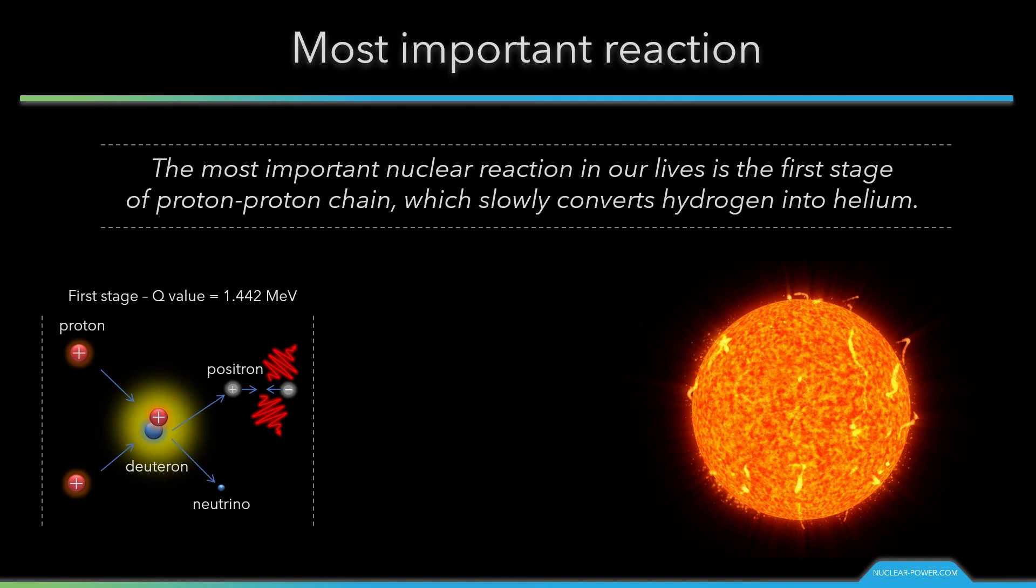It must be noted, deuteron-producing event is very rare due to it being initiated by the weak nuclear force. Diprotons are the much more common result of proton-proton reactions, but diprotons almost immediately decay back into two protons. The cross-section of the deuteron-producing reaction is so small that it has not been possible to measure it experimentally. This is very important because it significantly limits the reaction rate. The average proton in the core of the Sun waits 9 billion years before it successfully fuses with another proton.